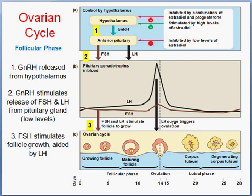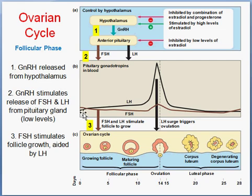Ovulation is the release of the ovum from the ovary into the abdominal cavity. When ovulation occurs, the follicle ruptures. To recap: GnRH was released from the hypothalamus, triggering the anterior pituitary to release FSH and LH. FSH and LH worked together during the follicular phase to grow and mature the follicle. LH surged at about 14 days, the follicle ruptured, ovulation occurred, and the ovum was released into the abdominal cavity.